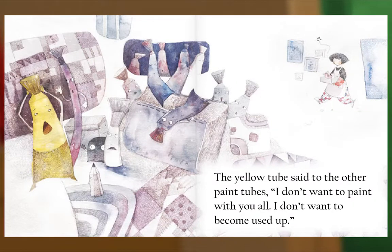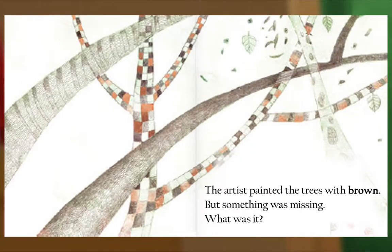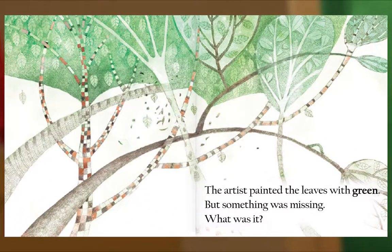The yellow tube said to the other paint tubes: I don't want to paint with you all. I don't want to become used up. That same day, the artist decided to paint the most beautiful painting ever for all the children in the world. The artist painted the trees with brown, but something was missing. The artist painted the leaves with green, but something was missing. What was it?